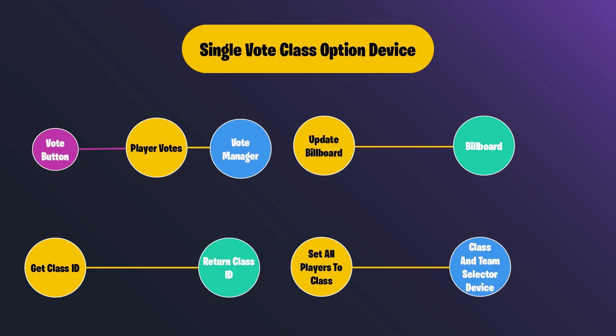This is a diagram for a single vote class option device. It has a vote button that inputs to a player voting, then that talks to the vote manager. It also has an update billboard function that updates the billboard associated with it. There is also a get class ID function which the vote manager needs. Finally, it has a function to set all players to a class, which talks to the class and team selector devices.